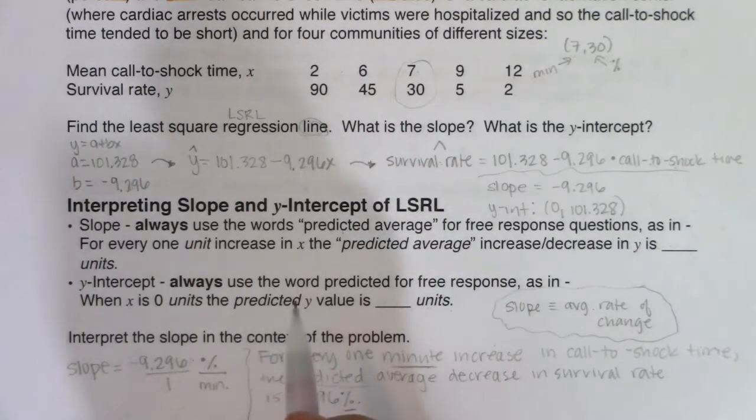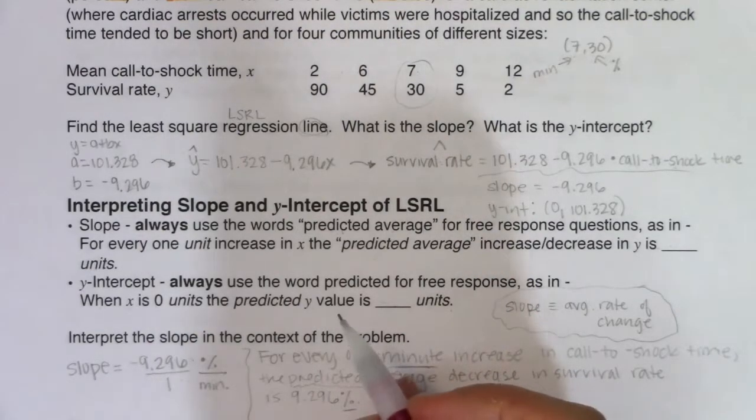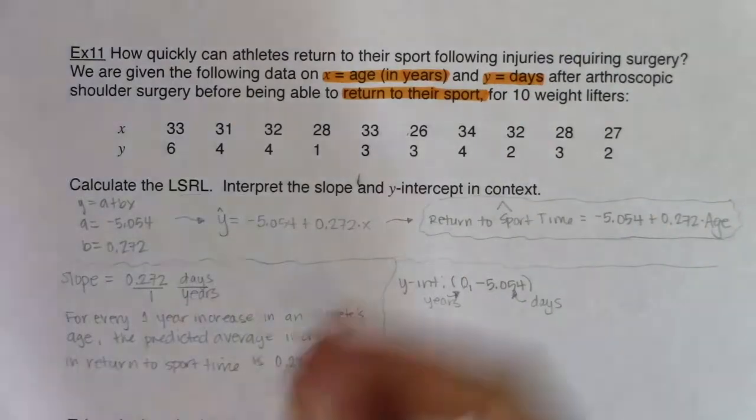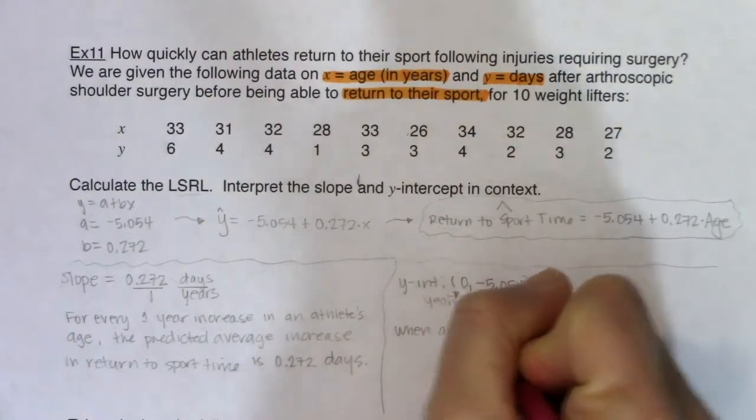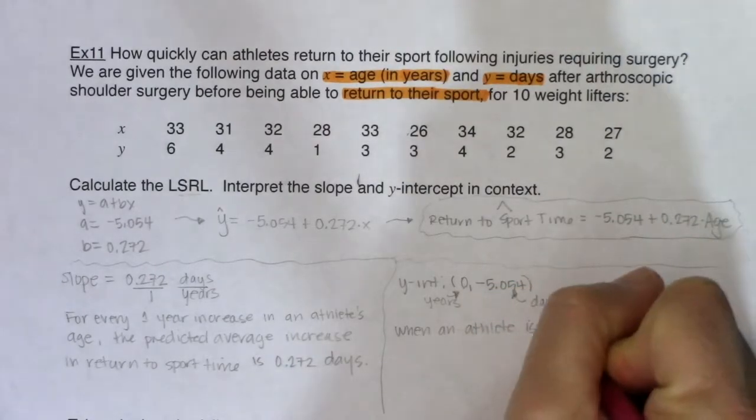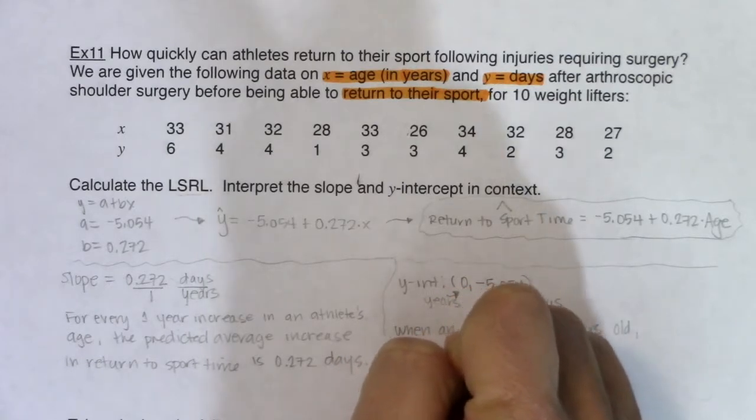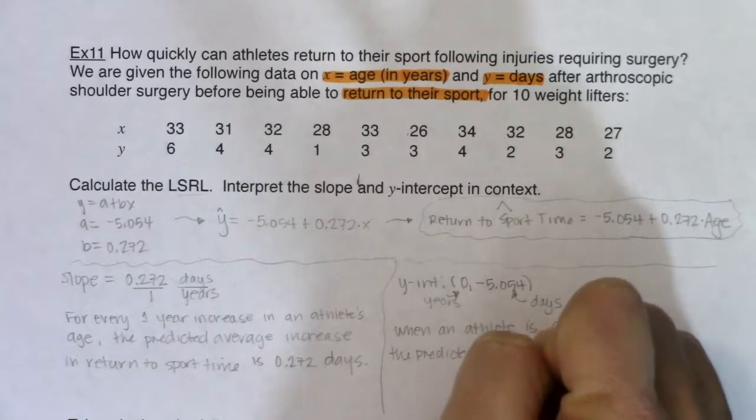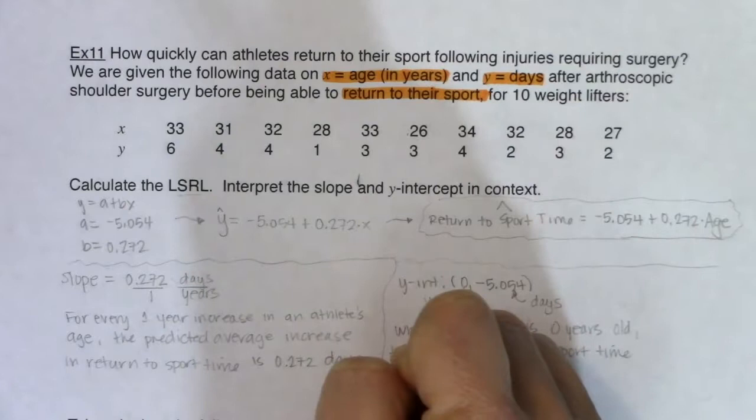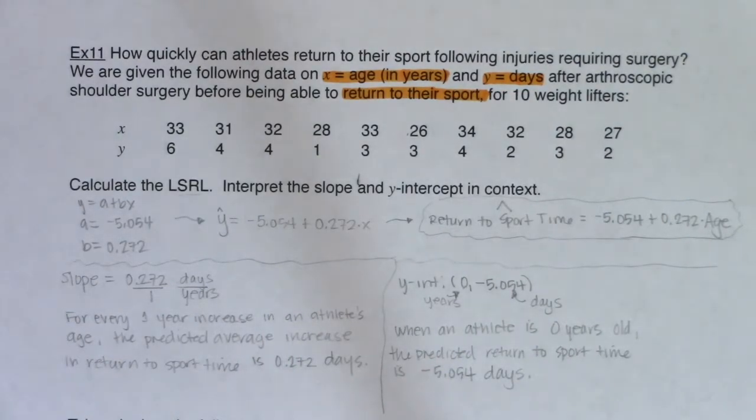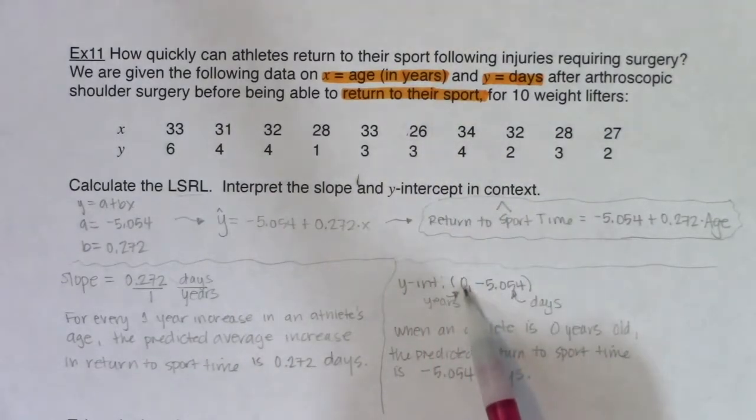When an athlete is 0 years old, the predicted return to sport time is negative 5.054 days. So you're just born, they gave you shoulder surgery, you were able to return to your sport five days before you were born. Nonsense, but it's super fun to interpret. Huge extrapolation because the smallest x value I had was 26 and this is coming in at x equaling 0. Definitely model breakdown at this point.